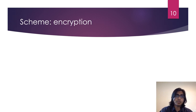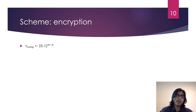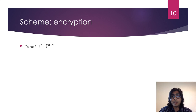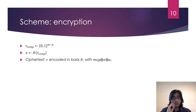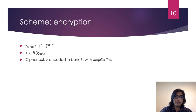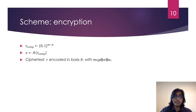Next, we look at how Alice encrypts a given message with her key. First, she samples R-comp uniformly at random from bit strings of length M minus K. These are the bits that will be encoded in the computational basis in her qubits. Then she computes X as the output of the hash function on R-comp. Now she has all the ingredients for her ciphertext — it's part quantum and part classical. The quantum part is the full string R encoded in Wiesner states according to the basis theta. The classical part is the message XORed with X and U.